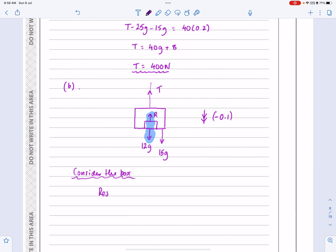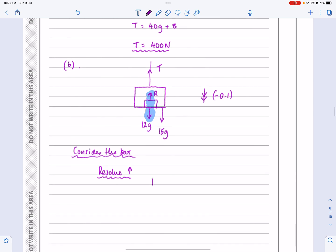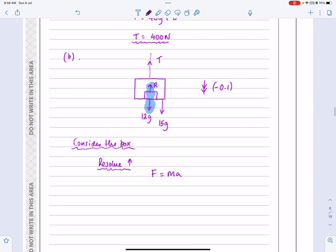Well, again, I can resolve vertically. This isn't going to be too bad. I can resolve vertically. And we're going to do F equals MA. I know it's going downwards. So I'm going to get 12G minus R is equal to mass times acceleration, which is 12 times minus 0.1.